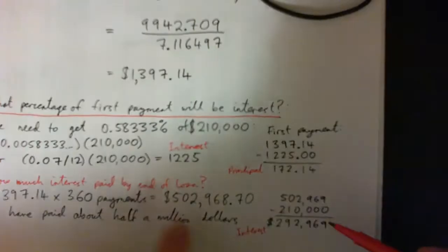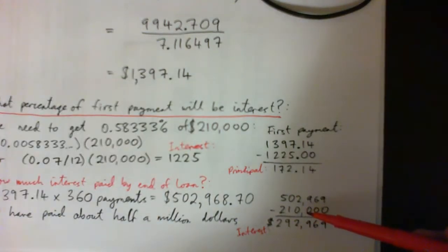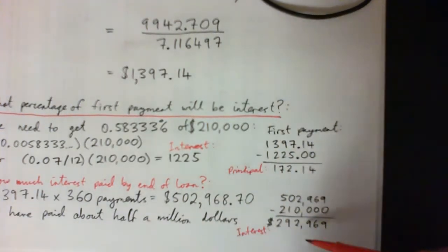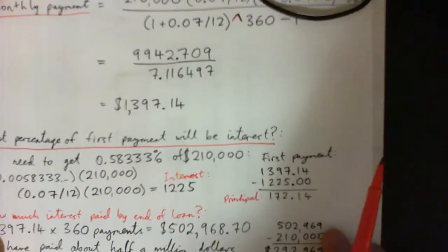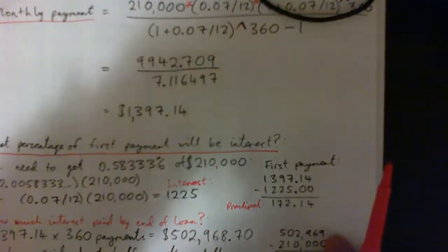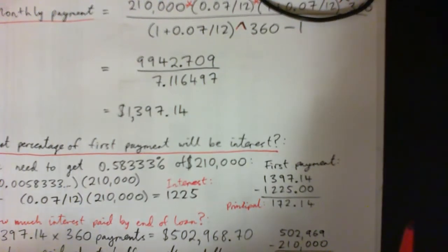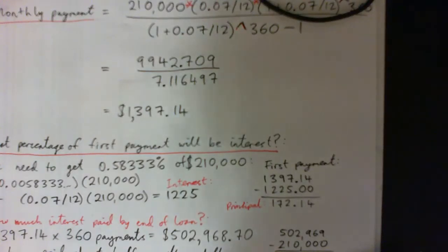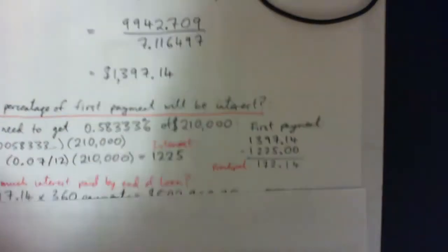Over 30 years we give the bank about half a million: roughly $210,000 is principal we paid back, and about $292,000 is interest. It does seem like a pretty bad deal — you loan $210,000 and pay back half a million. Obviously, if you can buy a house for cash that would be great. A 15-year mortgage would be great, even 10, 20, or 25 years is better than 30. The longer the term of the loan, the more interest you'll pay overall.